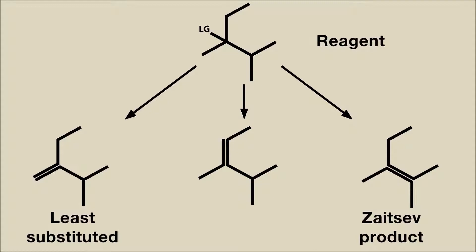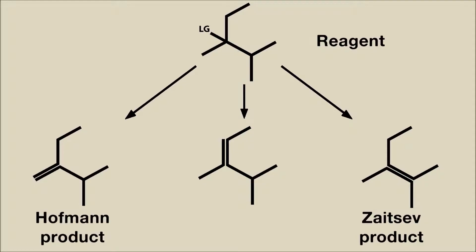The least substituted alkene is known as the Hoffman product, named after August Wilhelm von Hoffmann, who worked on a different type of elimination reaction that prefers the least substituted alkene, for which there is also a Hoffman rule.